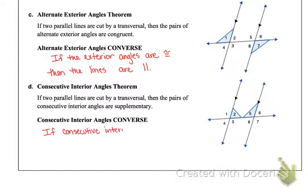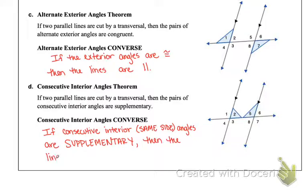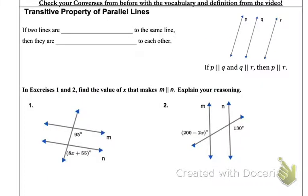And lastly, consecutive interiors. If the consecutive same-sided interior angles are supplementary, this one's a little bit different. If they're supplementary, then that tells us the lines are parallel. So we're going to use those in some of our theorems and proofs.